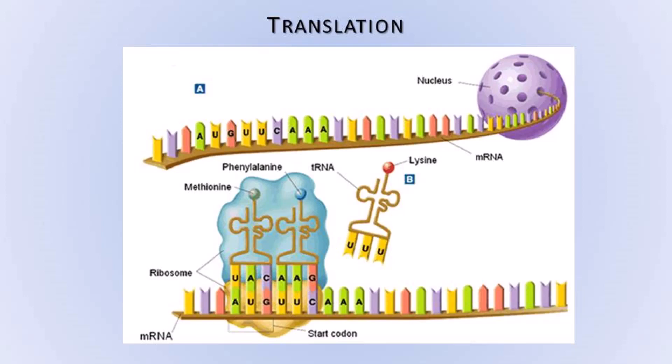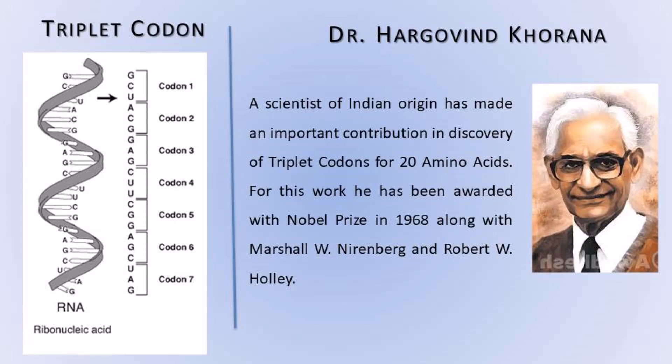Translation: Each mRNA is made up of thousands of triplet codons. As per the message on mRNA, amino acids are supplied by the tRNA. For this purpose, tRNA has an anticodon having a complementary sequence to the codon on mRNA. This is called translation. The amino acids brought in by tRNA are bonded together by peptide bonds with the help of rRNA. The mRNA formed in the nucleus comes into the cytoplasm, bringing the coded message from DNA. The code for each amino acid consists of three nucleotides, called a triplet codon.